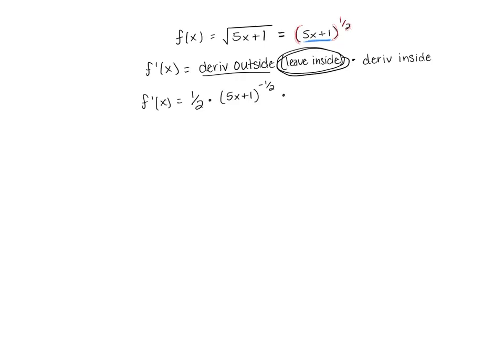And then we want to multiply that by the derivative of the inside. And so we said earlier the inside is 5x plus 1. The derivative of 5x plus 1, we'll just go part by part. The derivative of 5x is just 5. And the derivative of 1 is 0, so we don't need that part.